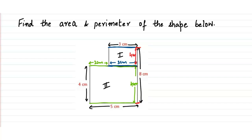Now can you figure out the area of the first rectangle? We now know both dimensions of the first rectangle. The area of the first rectangle will be four times three, that is 12 centimeters squared. The area of the second one will be five centimeters times four centimeters.